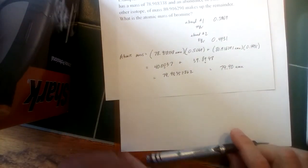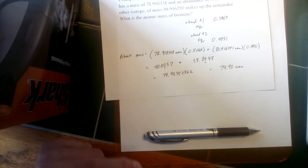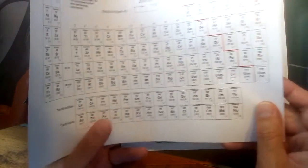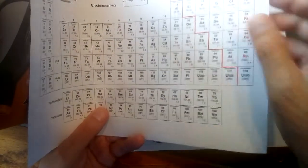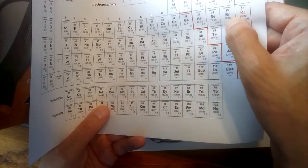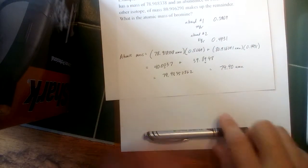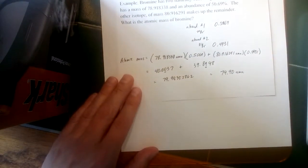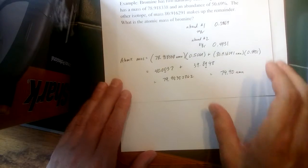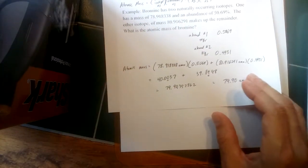In fact, if we look on the periodic table here, this periodic table that I use rounds everything to two decimal places—79.90 is what it has for the mass of bromine. So that seems like a pretty reasonable calculation there.